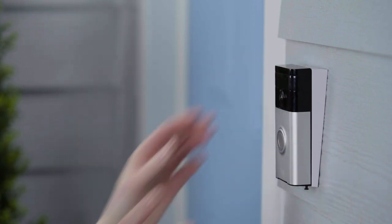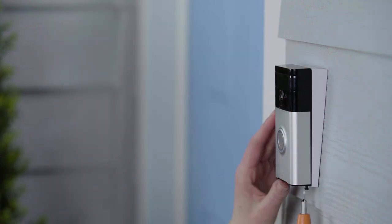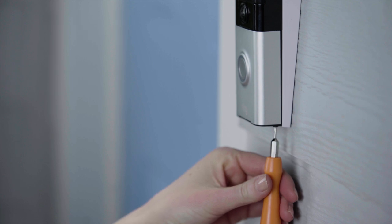After installing the Wedge Kit, attach your Ring Doorbell to the bracket and tighten the security screws on the bottom.